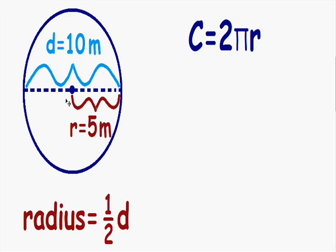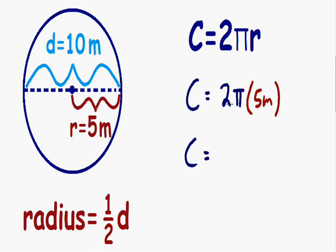Now that we know our radius, we can use our circumference formula. C = 2π times our radius. We know the radius is 5 meters, so I'm going to plug in 5 meters. Now we just multiply: 2 times 5 equals 10. We still have π and our units, which is meters.